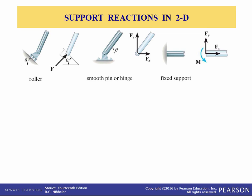Let's talk about support reactions in 2D. Before presenting a formal procedure of how to draw free body diagrams it's necessary to know what support reactions are and how to apply them. As a general rule a support prevents the translation of a body in a given direction by exerting a force on the body in the opposite direction. A support prevents the rotation of a body in a given direction by exerting a couple moment on the body in the opposite direction.